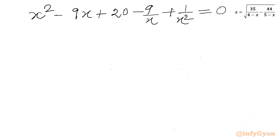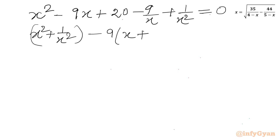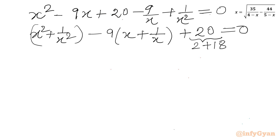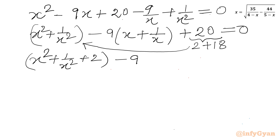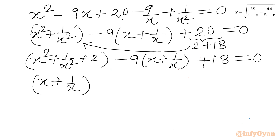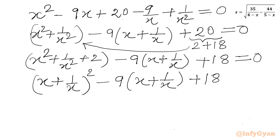Now I will consider the first and last terms together and the second and second-last terms together: (x² plus 1/x²) minus 9(x plus 1/x) plus 20 equals 0. I split 20 as 2 plus 18 and bring the 2 into the first bracket, giving (x² plus 1/x² plus 2) minus 9(x plus 1/x) plus 18 equals 0, which is (x plus 1/x)² minus 9(x plus 1/x) plus 18 equals 0.